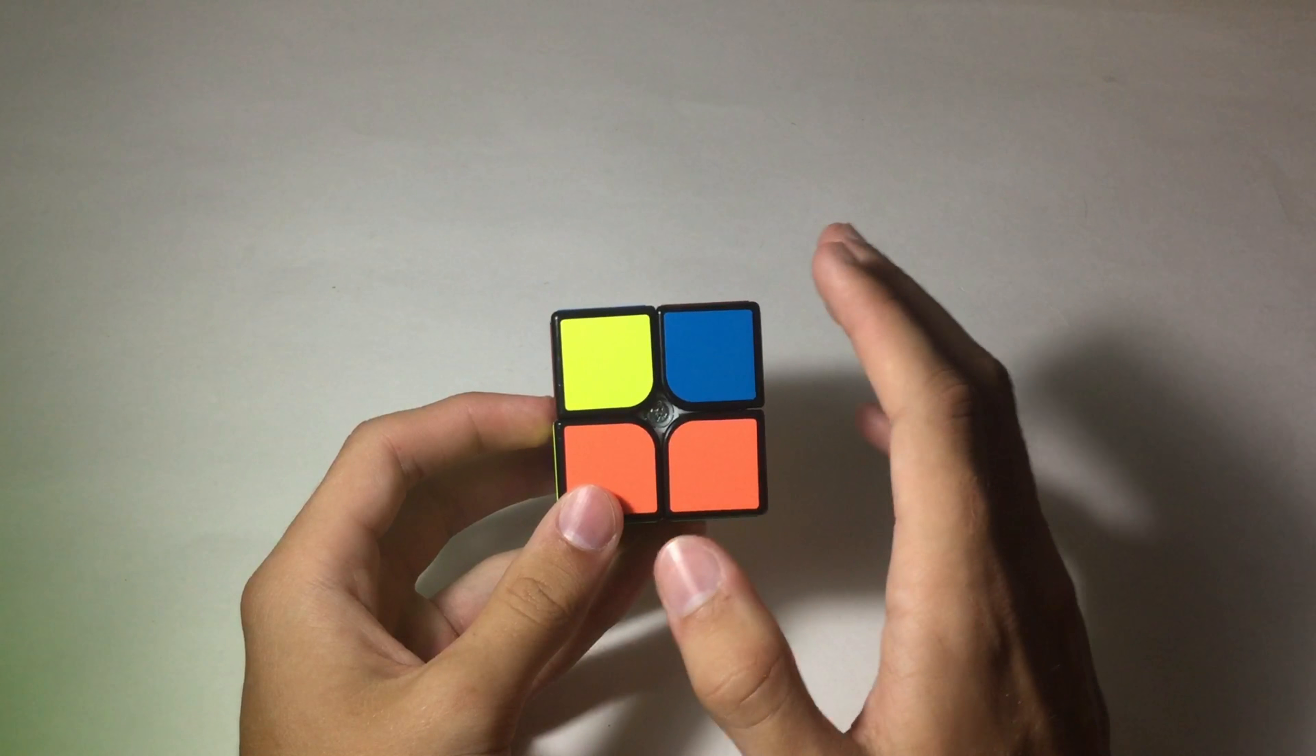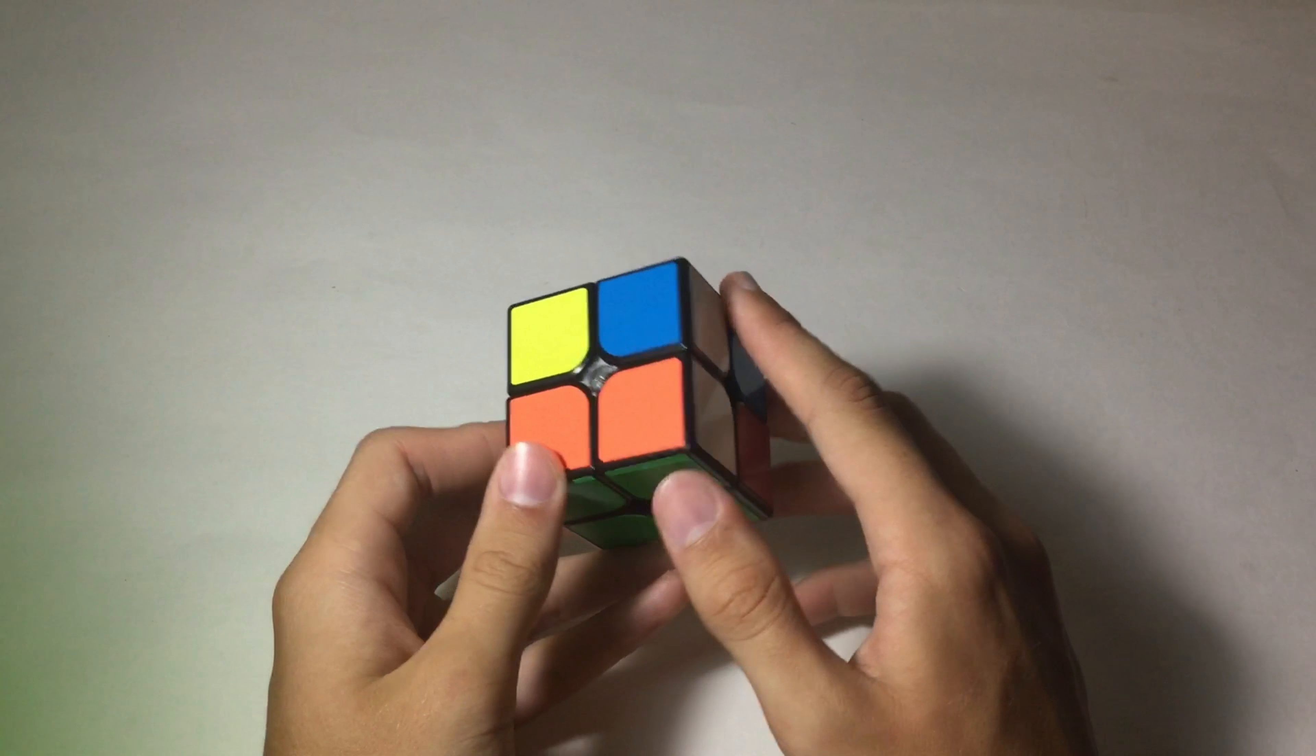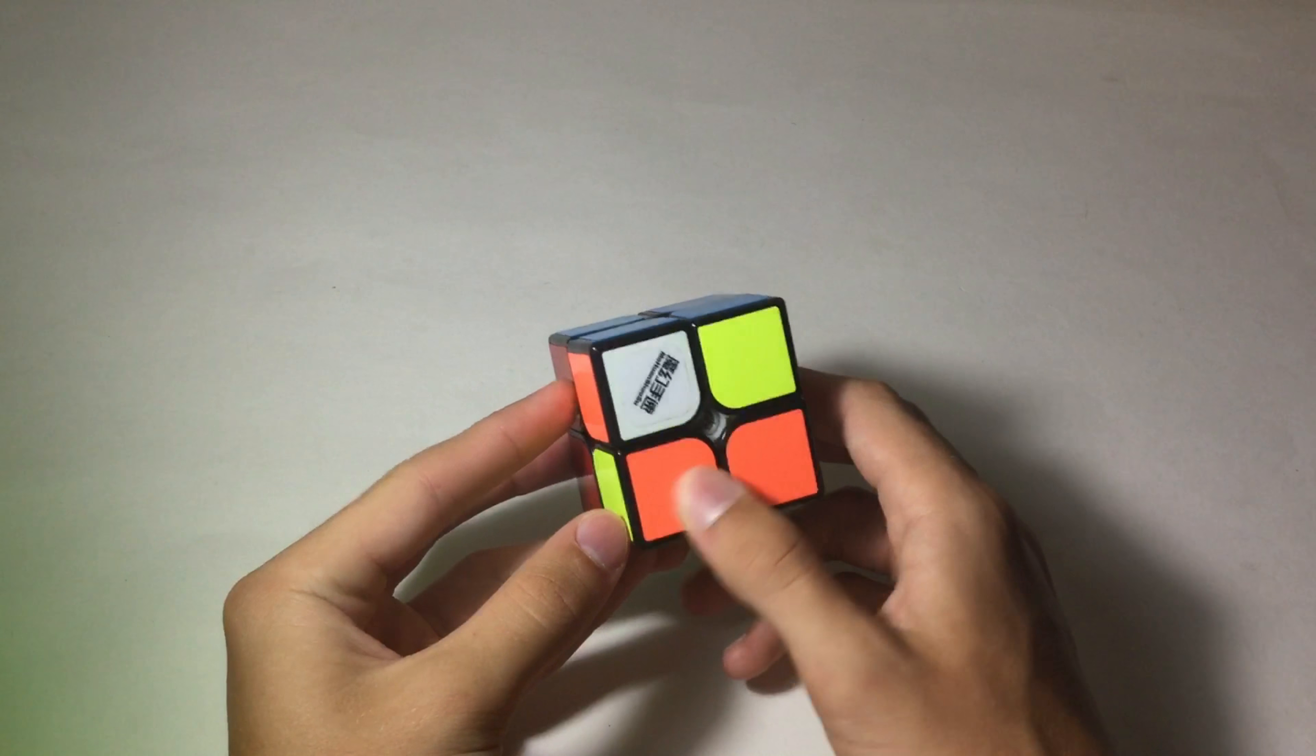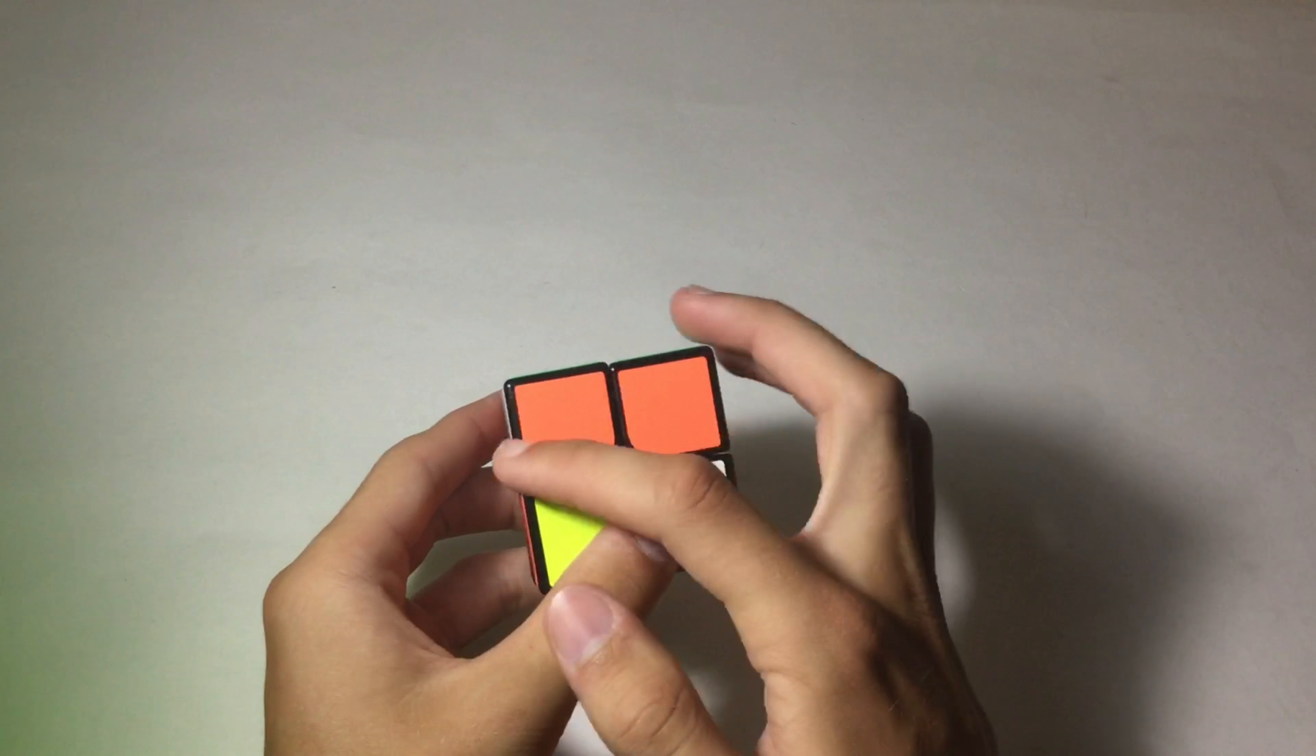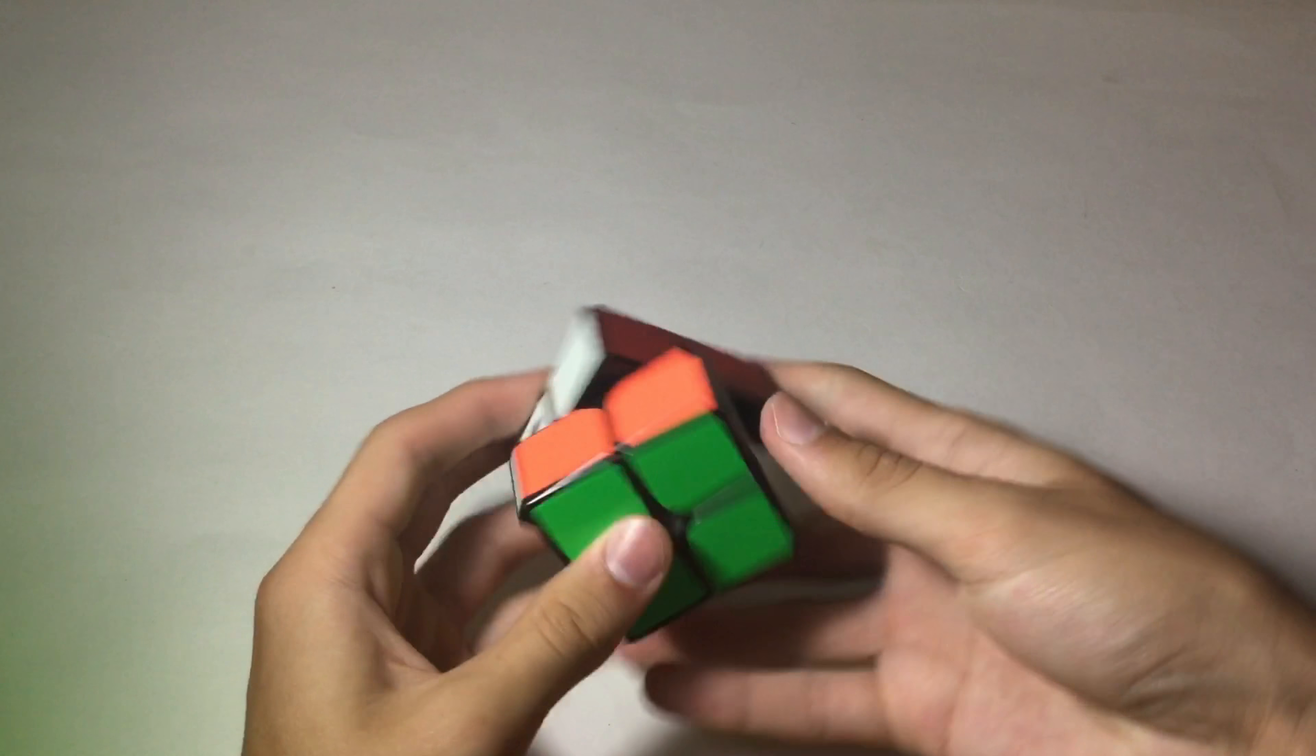If you guys want to know all of the last layer cases for Ortega I will link my video tutorial on the Ortega method in the description below. So this is a Sune so just R U R prime U R U2 R prime. And now here's where the bar comes in handy - I know because it's opposites all around that is going to be the one bar case which has to turn it so the bar is on top and facing us. It's just a bar case R U prime R F2 R prime U R prime and that will solve the two by two.